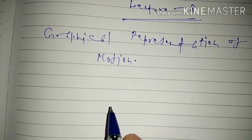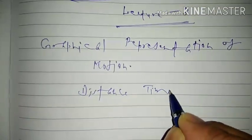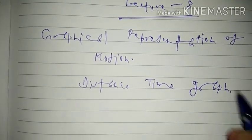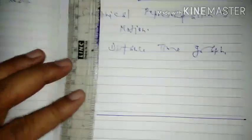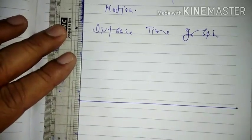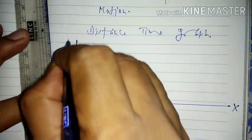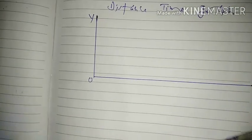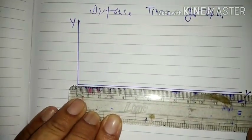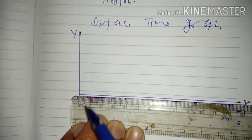First of all we shall try to trace the distance-time graph. For the distance-time graph, we take time on the x-axis and distance on the y-axis. This is our origin. According to our convenience we choose our scale — the right way to choose a scale is to take equidistant points.